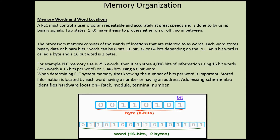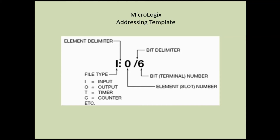When determining a PLC system memory size, knowing the number of bits per word is important. Stored information is identified by each word having a number or address. Addressing schemes also identify hardware location, rack, module, and terminal number. Looking at the MicroLogix addressing template: the first part of the address is always the file type. For an input it's I, for outputs it's O, timers T, counters C. When you have something wired into an input module it will always start with I, and if you use a timer it always starts with T. That is the file type - the location where the information will be stored.